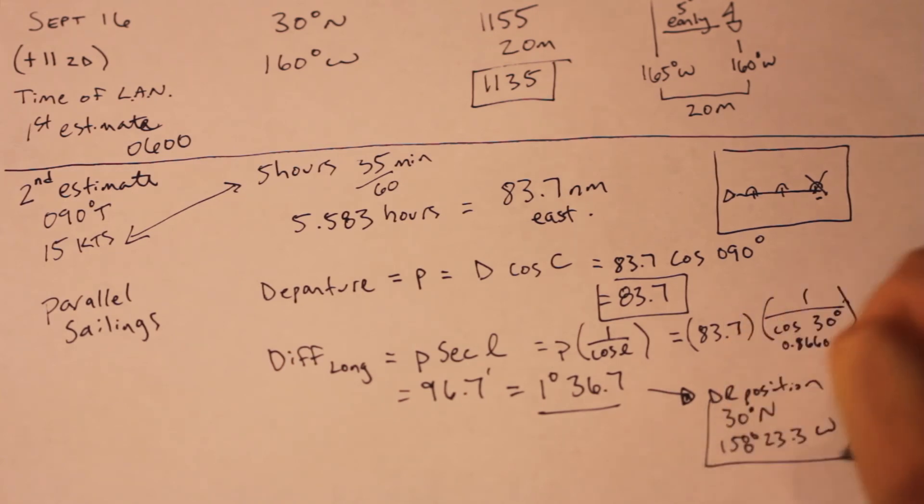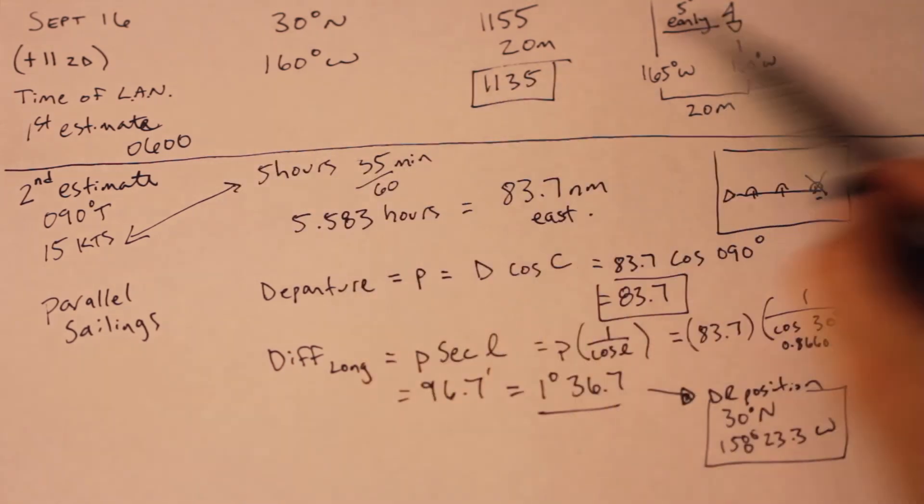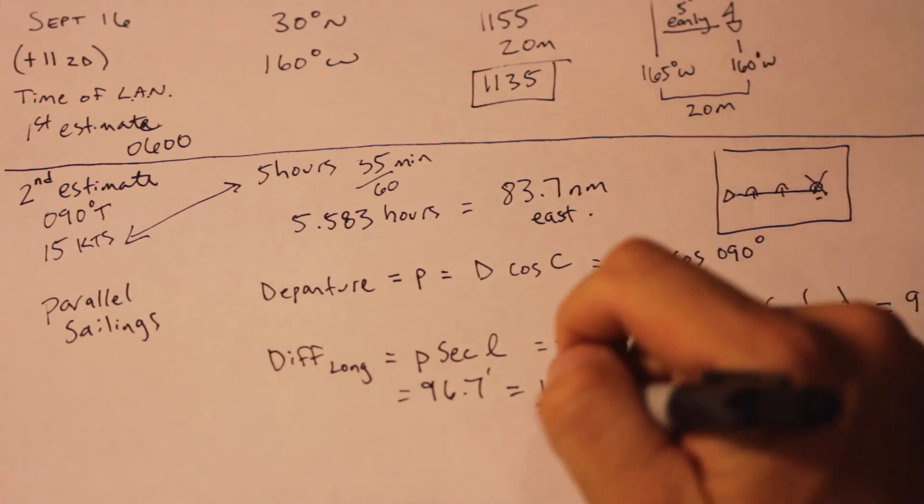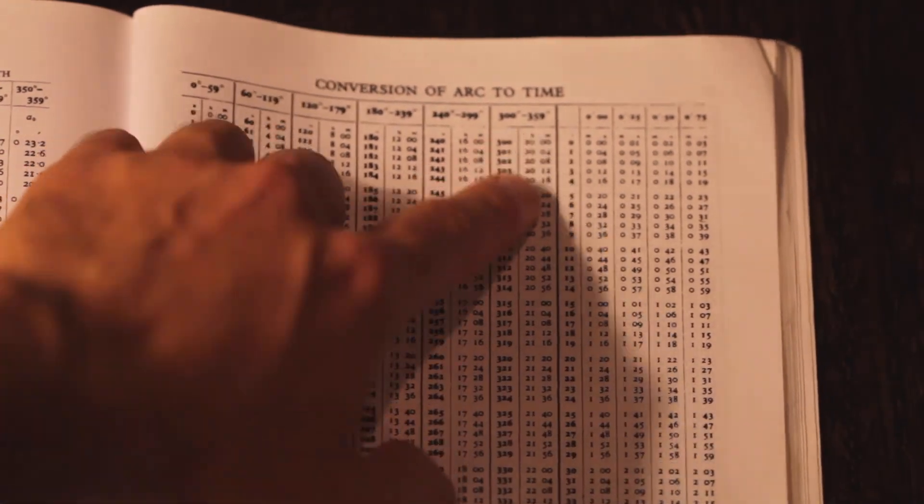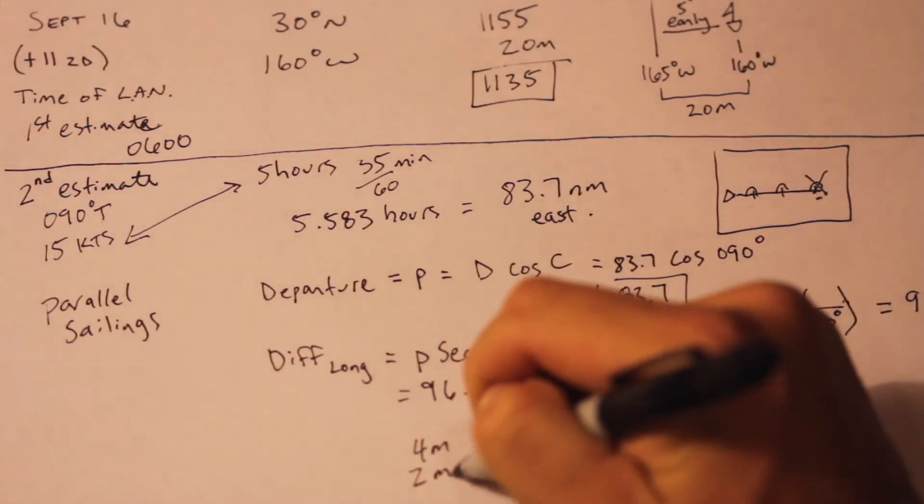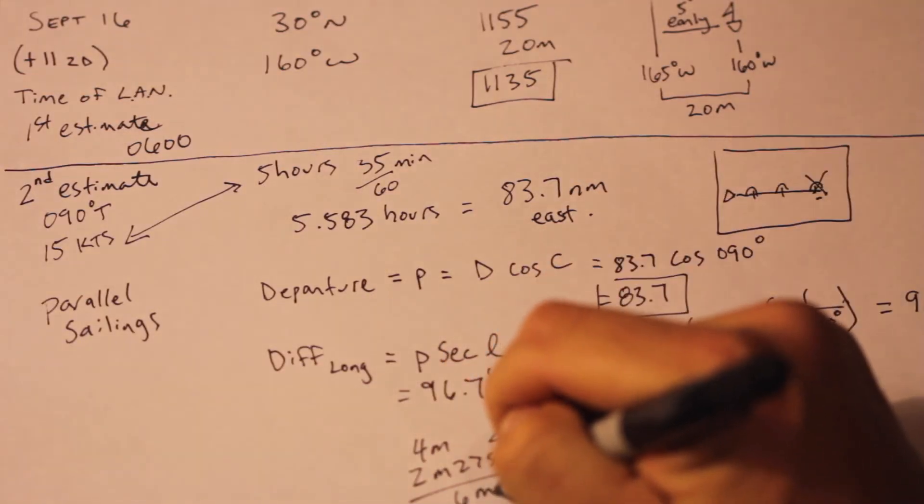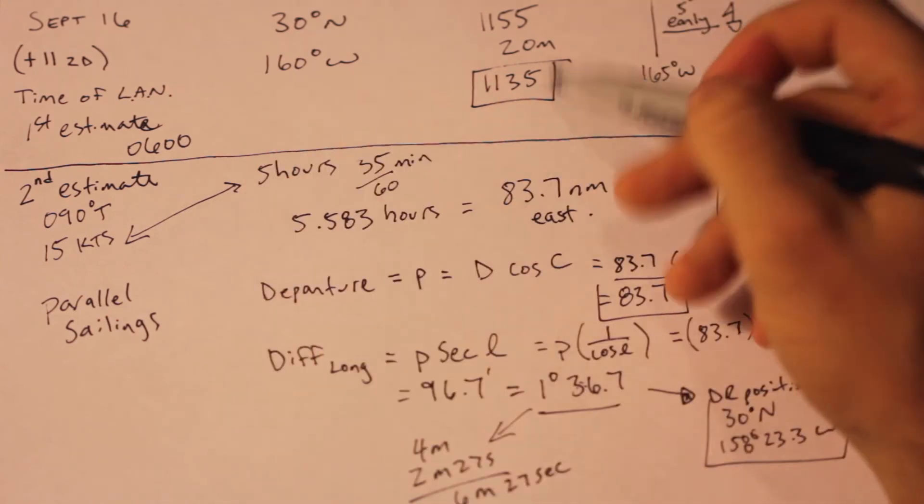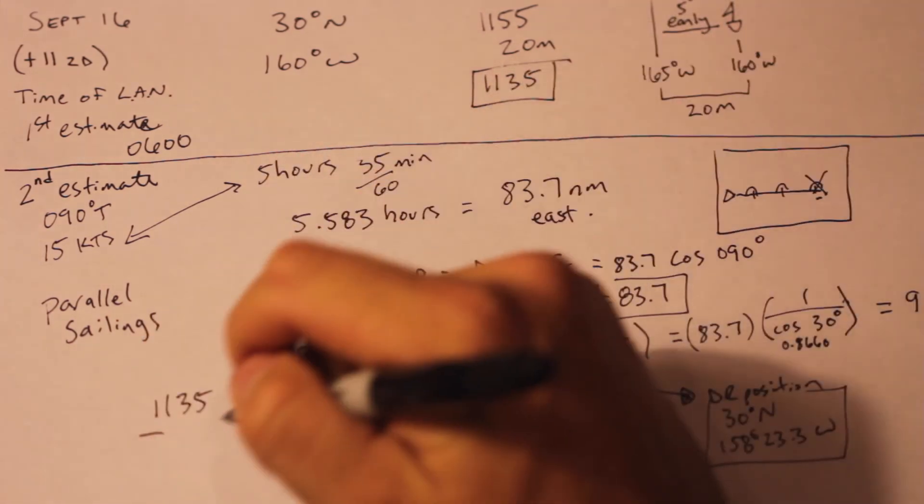So we could subtract that value from our DR longitude and get a new position, and then calculate our time for that new position. Since we already did most of the work, we can just get a conversion of arc to time for this value and apply it to our earlier example. So this is worth 6 minutes and 27 seconds of time, which we subtract from our earlier calculation to get a final answer of 11 hours, 28 minutes, and 33 seconds.